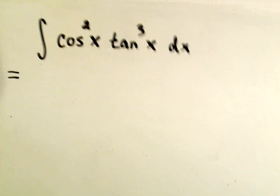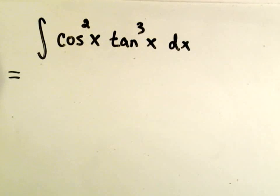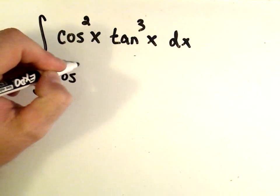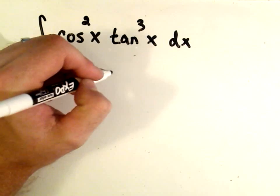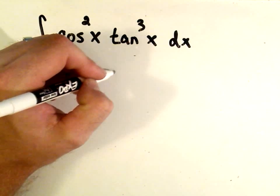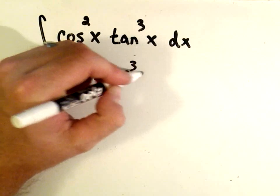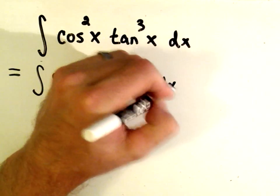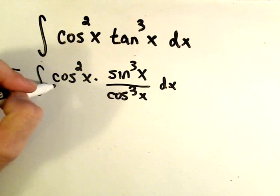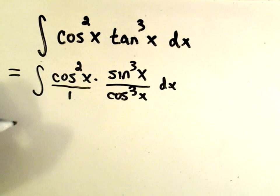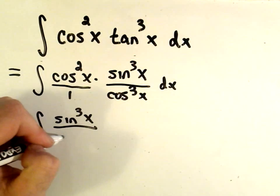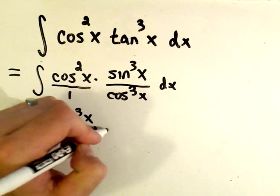In this problem, we're going to integrate cos²x tan³x. A lot of times what I'll do is I'll put everything in terms of sines and cosines. I can write tan³x as sin³x over cos³x. That's nice because now you can think about the cos²x as being over 1. So I have 2 on top, 3 on the bottom. I'll be left with sin³x over just cos x dx.